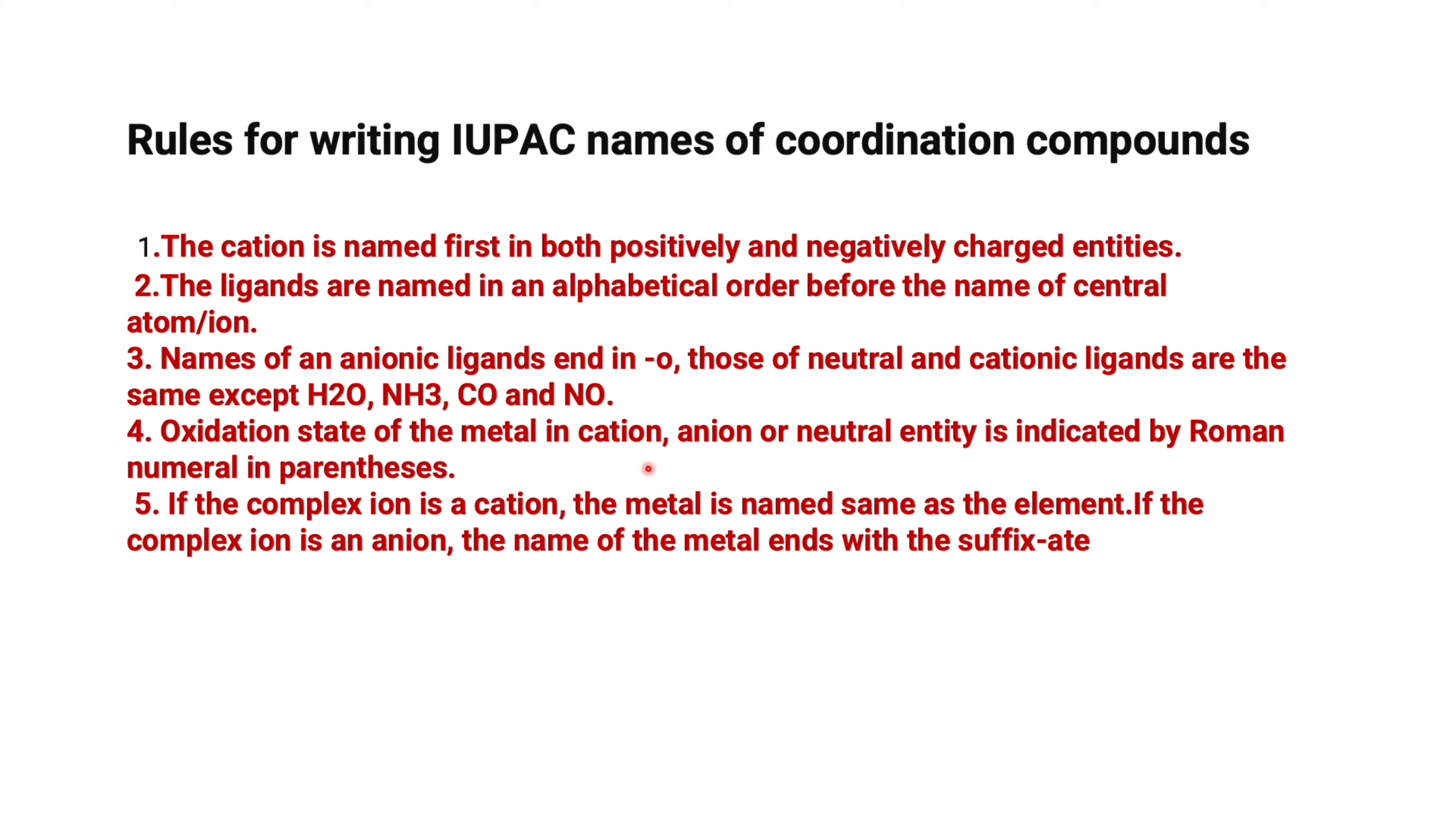Oxidation state of the metal in cation, anion or neutral entity is indicated by Roman numeral in parentheses. If the complex ion is a cation, the metal is named same as the element. If the complex ion is an anion, the name of the metal ends with the suffix -ate.